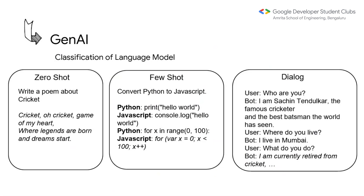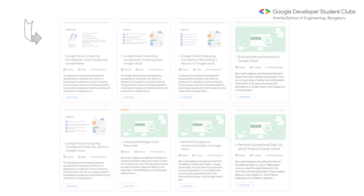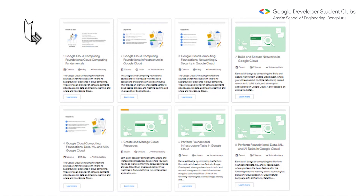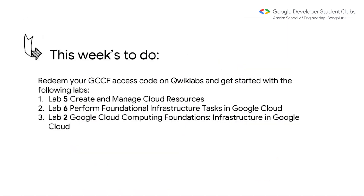One thing to add about zero-shot learning: the question can be very vague. For example, 'write a poem about cricket' — cricket could be the insect or the sport. The model might not know which one you mean, and the answer will be very vague or vary every time. That's why it's called zero-shot: you don't give it examples before asking, so the interpretation depends entirely on what data it has been trained on.